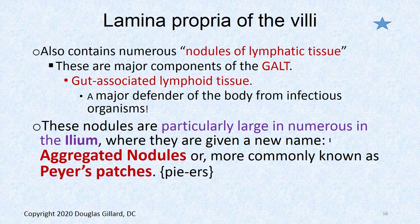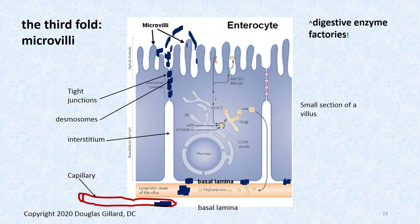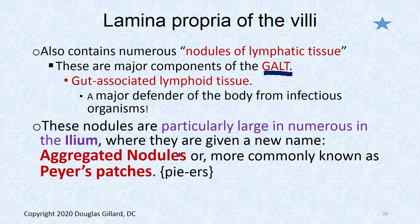The lamina propria of the villi contains GALT — gut-associated lymphoid tissue — which is super important because there are a lot of bugs everywhere. Your digestive system is fairly dirty, filled with bugs trying to get in all the time. We have an extra kind of lymphatic system for protection — these aren't lymph nodes, just an extra lymphatic system of nodule shape called gut-associated lymphoid tissue. It's a major defender against infectious organisms, very large in the ileum in particular, where bacteria are farther from the acid environment and easier to grow.